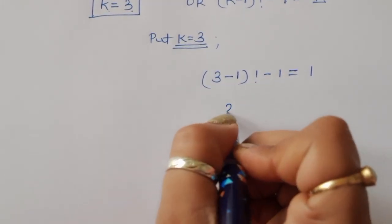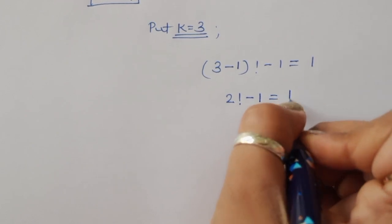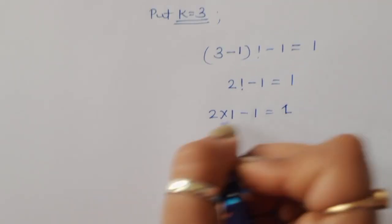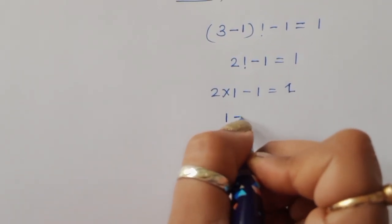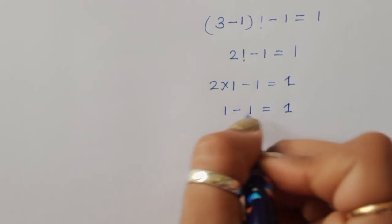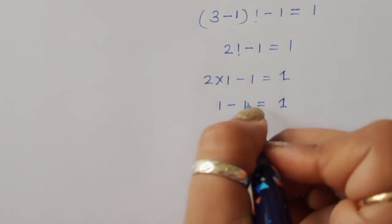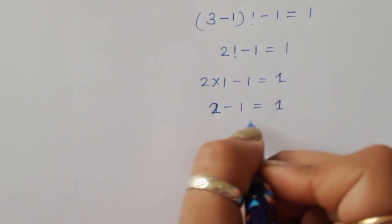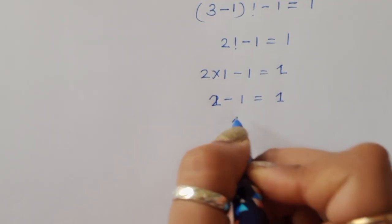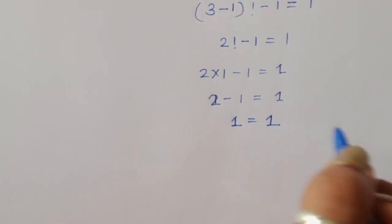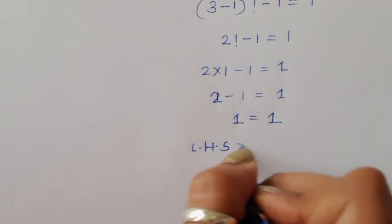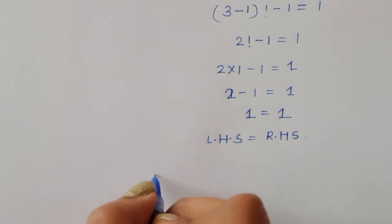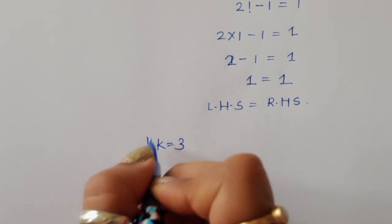Factorial of 2 minus 1 equals 1. Factorial of 2 is 2 times 1, so 2 minus 1 equals 1. LHS equals RHS, so k equals 3 is the correct solution.